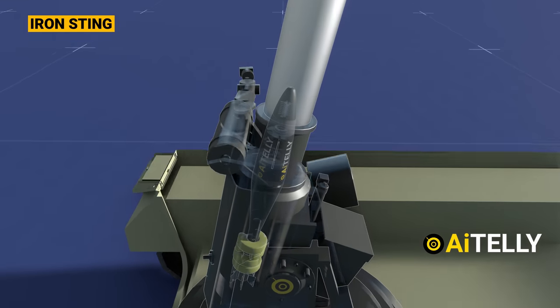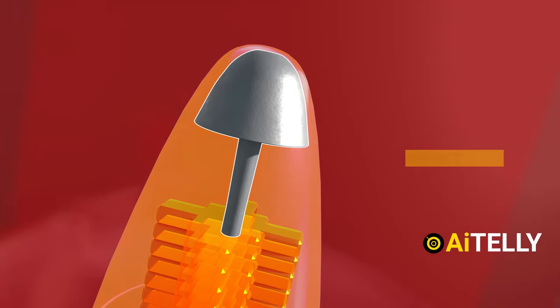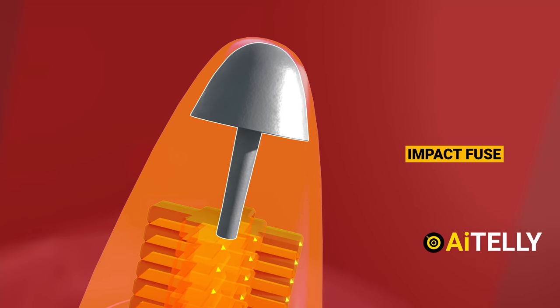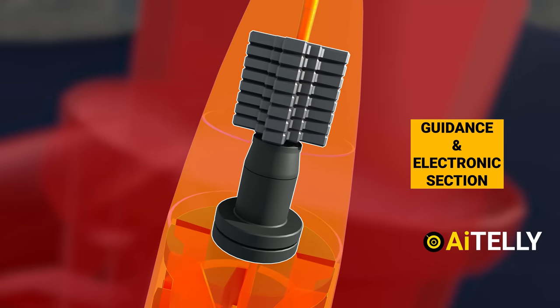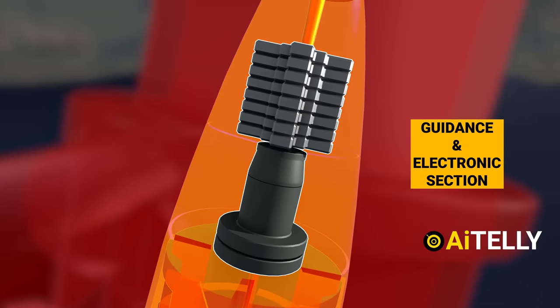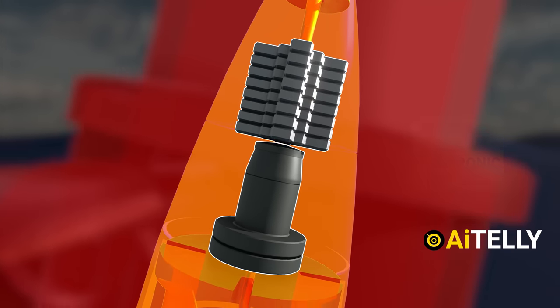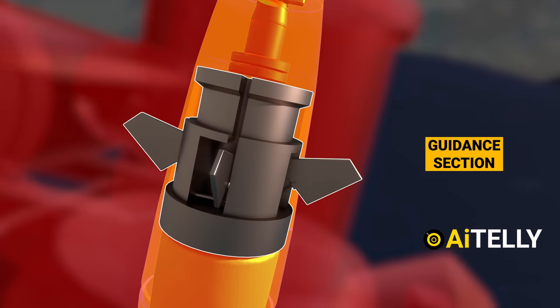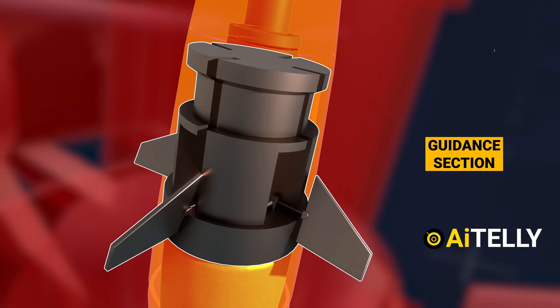Let's examine the interior of the Iron Sting. At the front, you'll find an impact fuse. Just behind the impact fuse, there's the guidance and electronics section, which is connected to a small battery used to power it. This guidance section, equipped with fins, deploys exactly as depicted in these visuals.